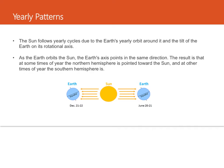The Sun follows yearly cycles due to the Earth's yearly orbit around it and the tilt of the Earth on its rotational axis. As the Earth orbits the Sun, the Earth's axis points in the same direction. The result is that at some times of the year, the northern hemisphere is pointed toward the Sun, and at other times of the year, the southern hemisphere is pointed toward the Sun.